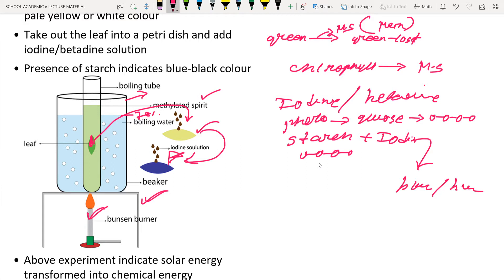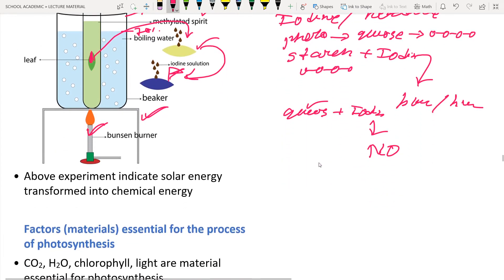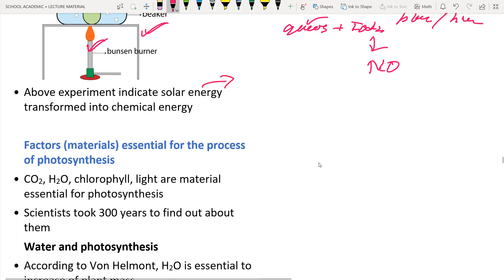Iodine reacts only with starch, not with glucose. If you mix glucose with iodine you will not see a blue-black color. So if the leaf turns blue-black, that is an indication that photosynthesis has occurred and light energy has been converted into chemical energy in the form of glucose and starch. We can conclude that solar energy is converted into chemical energy through this experiment.